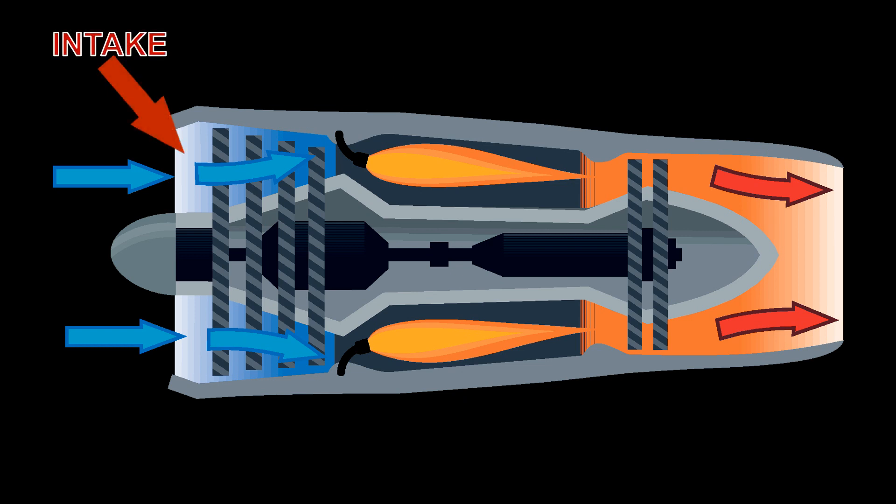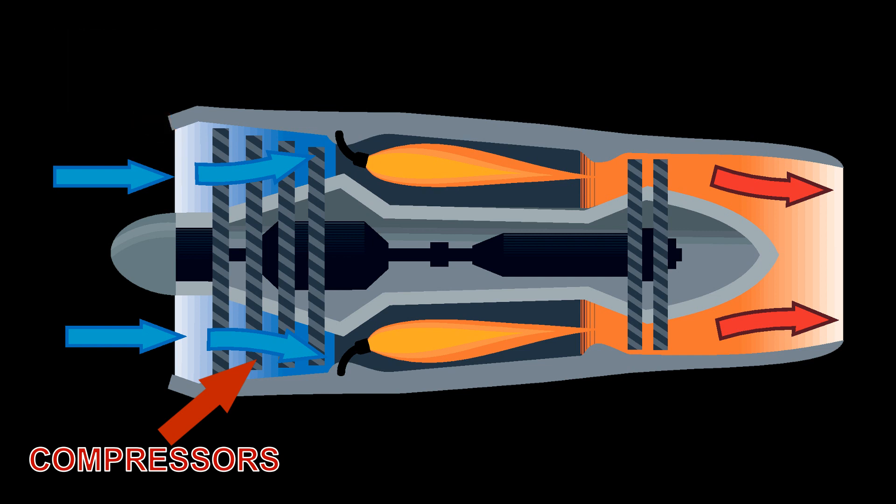Air is drawn into the intake, where it meets the compressors. There are various types of compressor, but the compressor's basic job is to compress the air so that it leaves the compressor at high pressure.